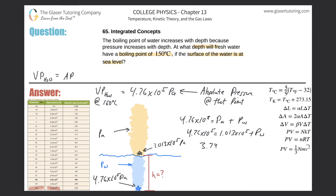That gives us approximately 3.747 times 10 to the 5 Pascals. That is the pressure that the water alone is exerting on this particular location at the bottom.